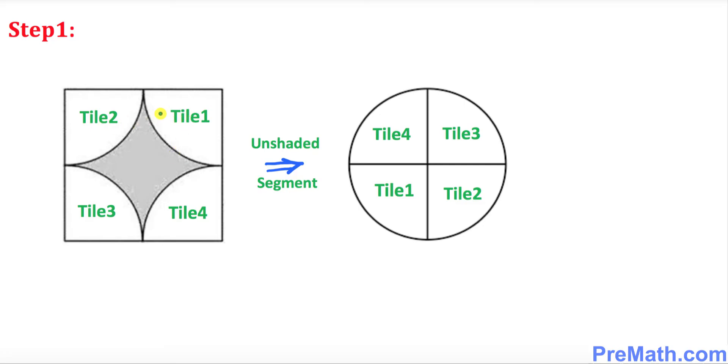We're going to focus on the unshaded region. So you can see we have four different tiles - I call them tile one, tile two, tile three, and tile four - and we want to restack them. This is just like a puzzle. If we restack them, tile one is gonna go over here.